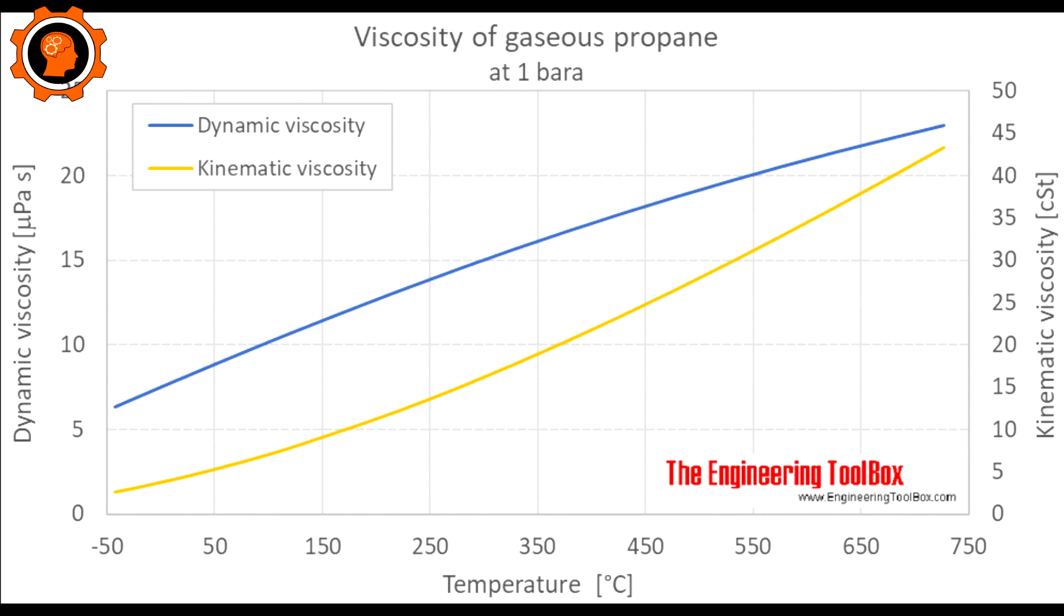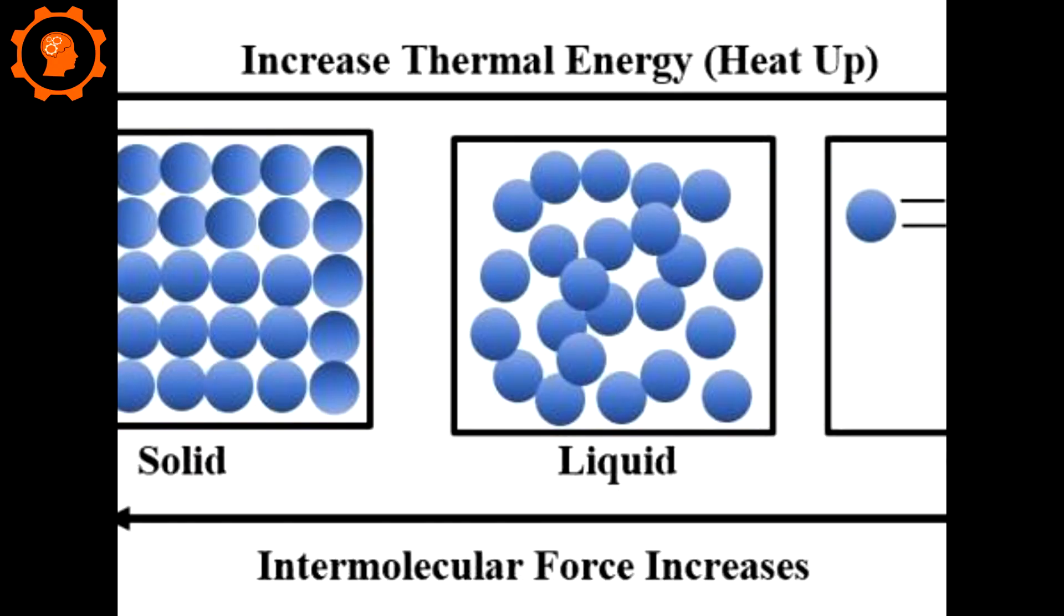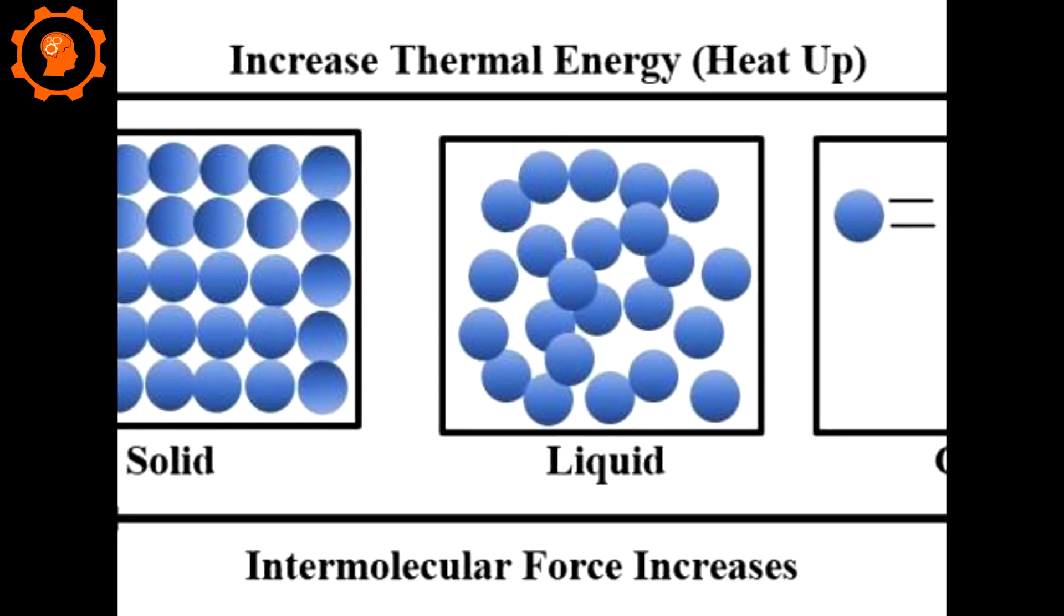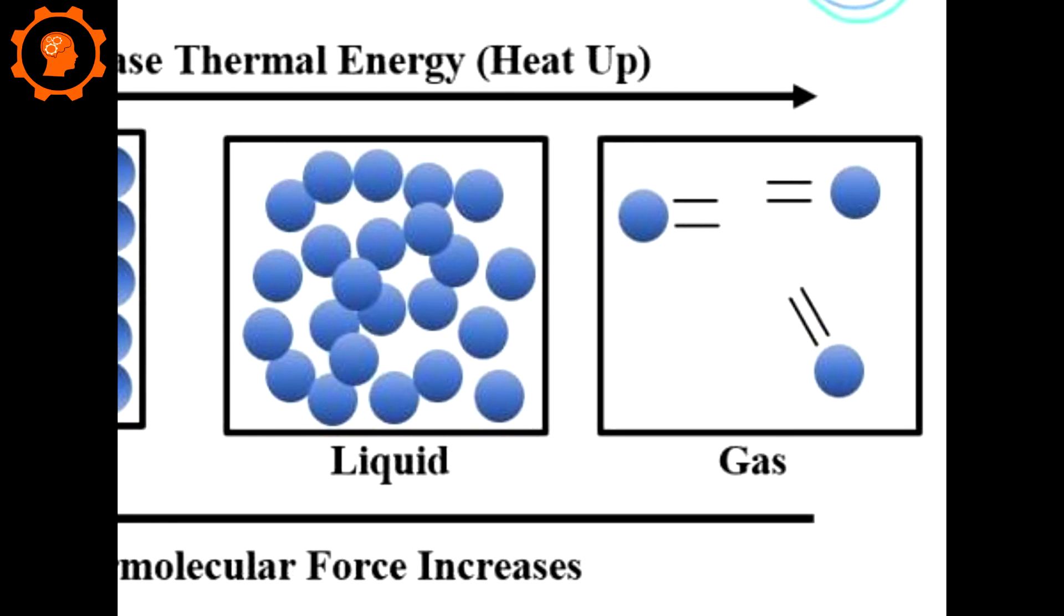So basically fluidity decreases and the reason is because in liquid there are already intermolecular interactions when you increase the temperature. So basically those intermolecular interactions break away and eventually it helps in the fluidity. But on the other hand there is apparently no strong intermolecular interactions as compared to liquid and when you heat it up so basically they have more collision with each other and that is why it has less fluidity or more viscosity.